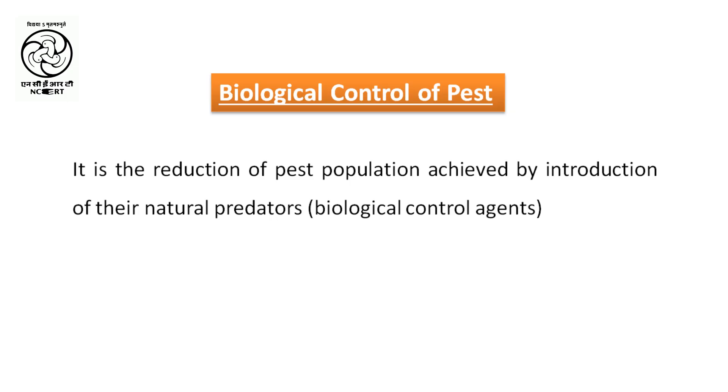What is biological control of pests? When biological pests like insects and rodents are controlled by their natural predators like snakes or lizards, this type of control is known as biological control of pests. That's all for today — goodbye, students.